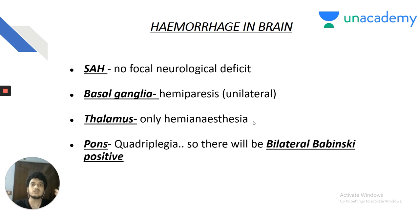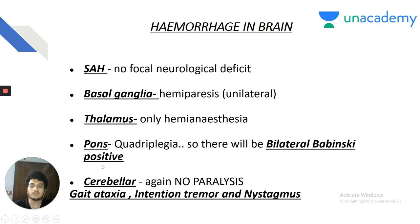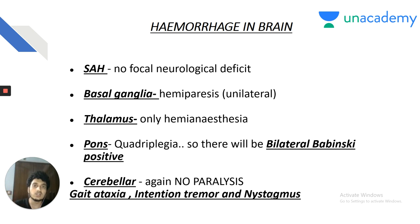Pontine bleed produces quadriplegia or locked-in syndrome — bilateral Babinski positive. Cerebellar bleed: no paralysis in cerebellar hemorrhage. The characteristic symptoms are gait ataxia, nystagmus, and intention tremors. Intention tremor and dysgraphia are seen in cerebellar lesions, whereas resting tremor and micrographia are seen in Parkinson's disease.